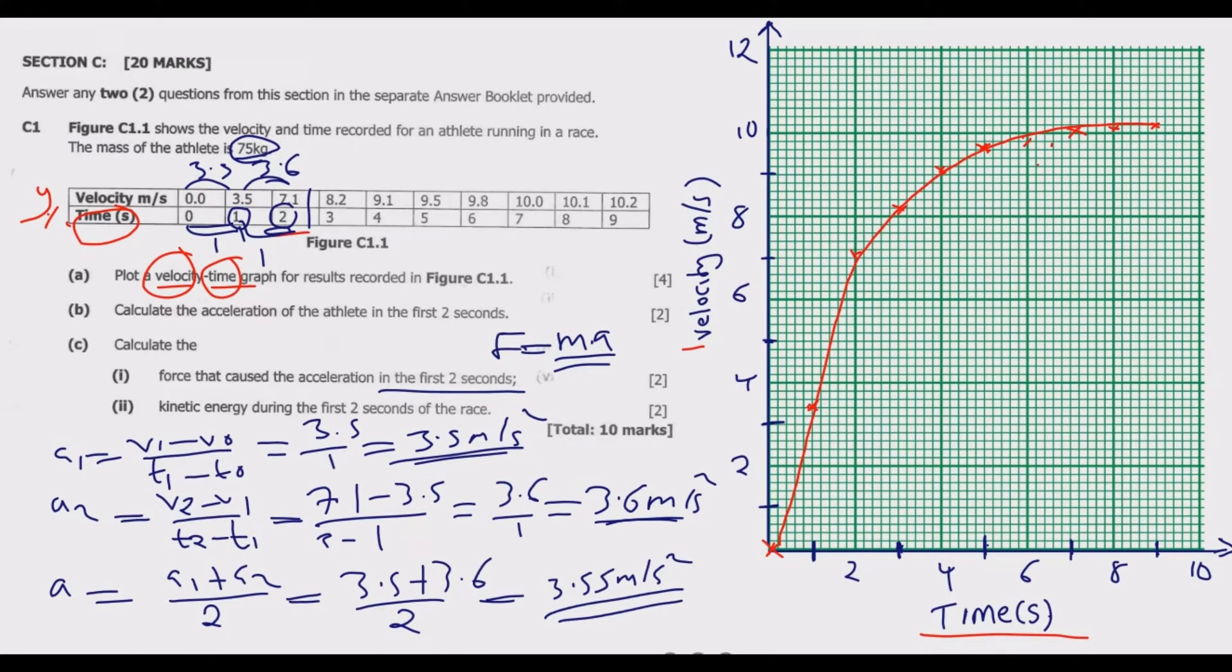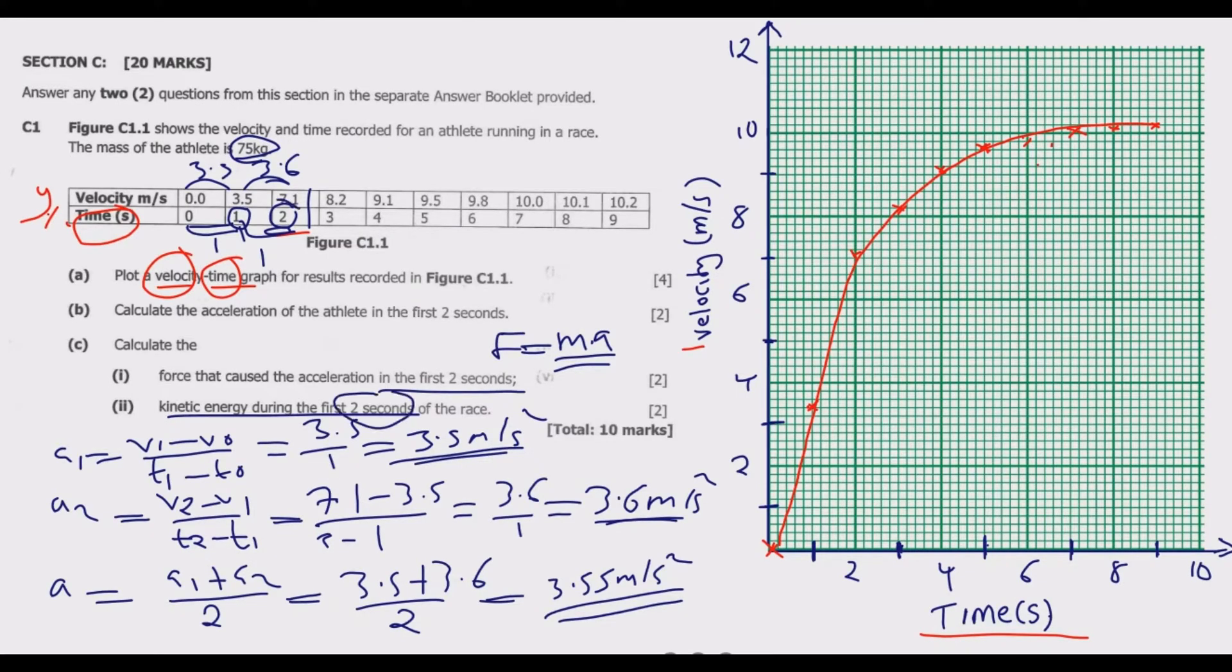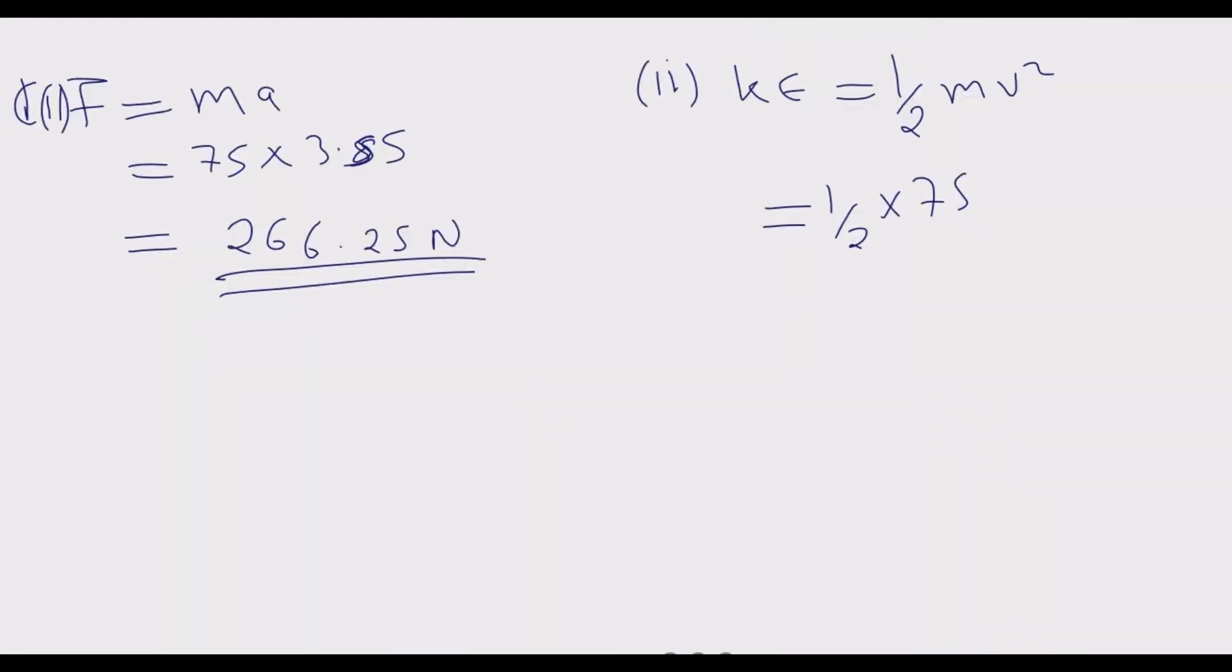Once you multiply these we are going to get about 266.25 newtons as your answer. So this is the exact value. Let us look at question C Roman numeral 2: kinetic energy in the first two seconds. So kinetic energy is given by half mass velocity squared. What is the mass? The mass of this athlete is 75 kg, so we multiply by 75 kg. Then what is the velocity at two seconds? It is 7.1, so we put 7.1 and square it. Then basically we can use our calculator. Once we multiply using the calculator what we are going to find is we are going to get 1890.838 joules.